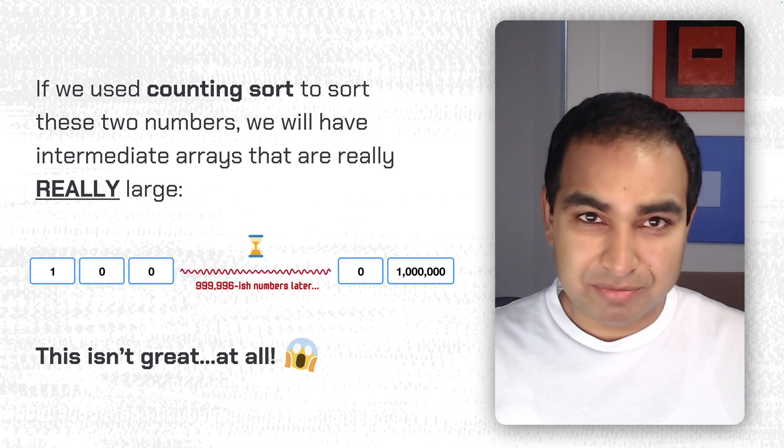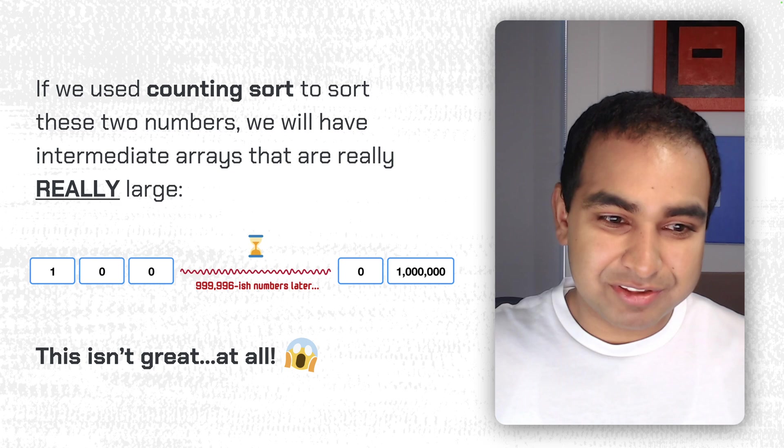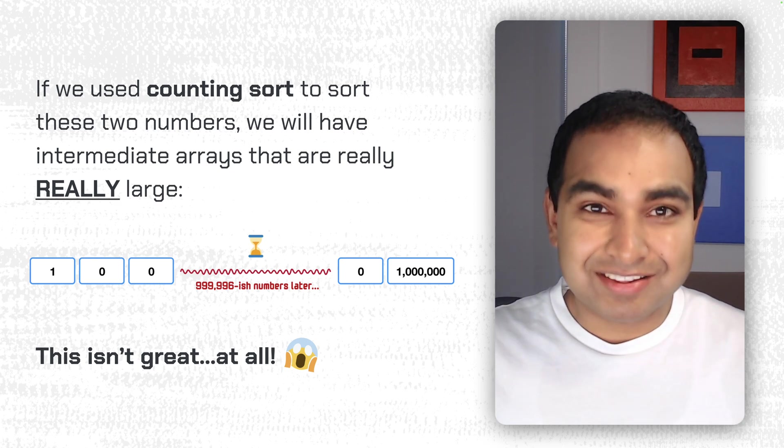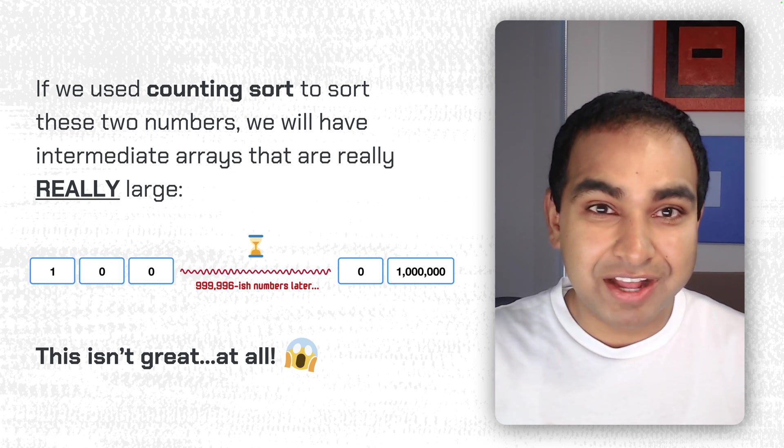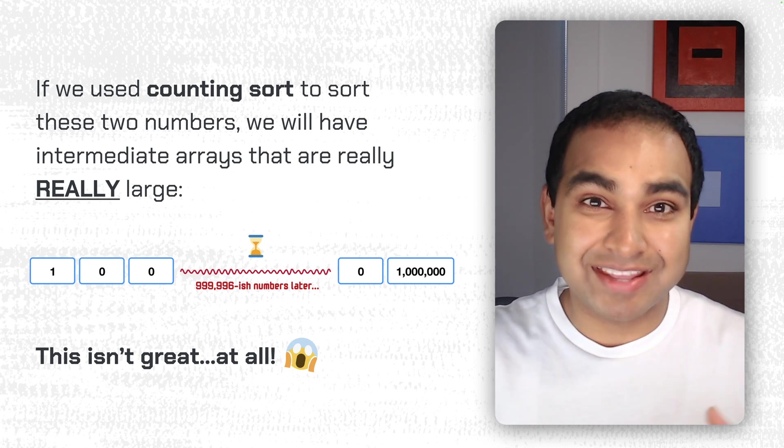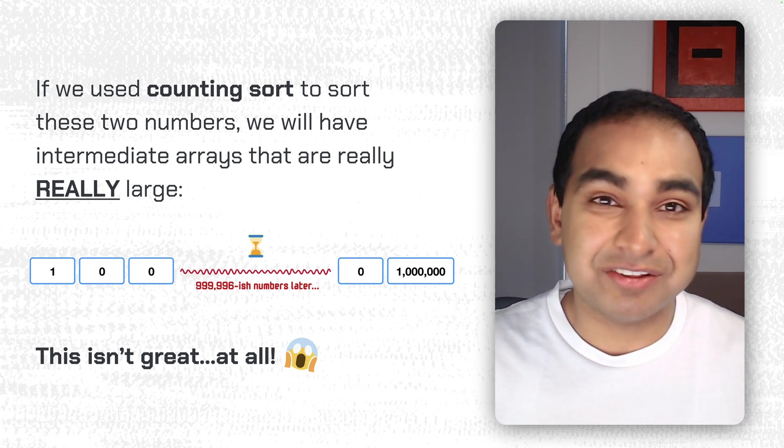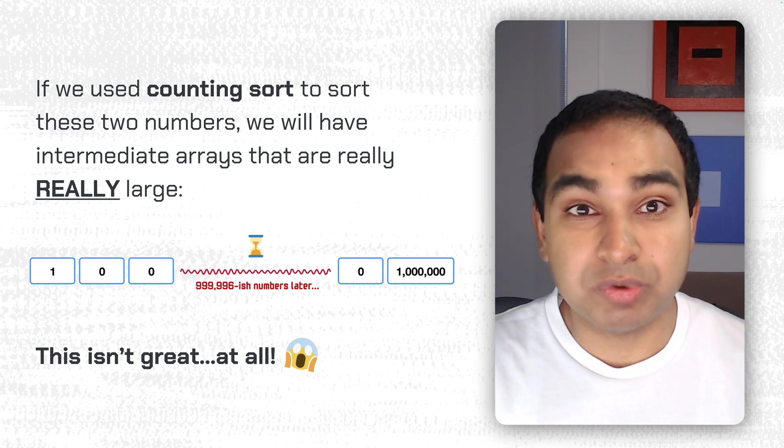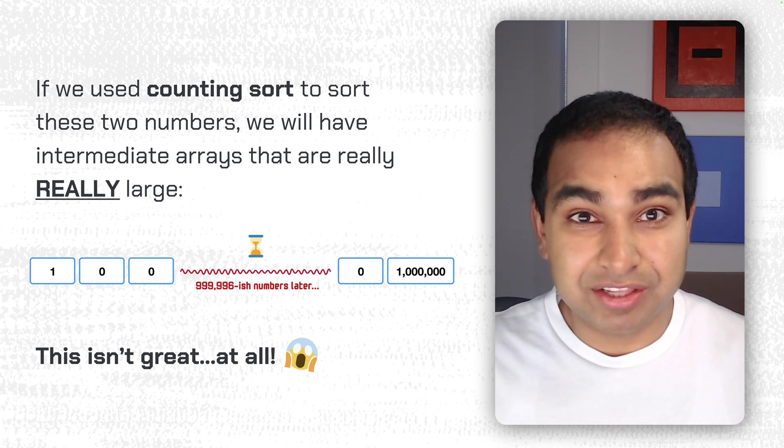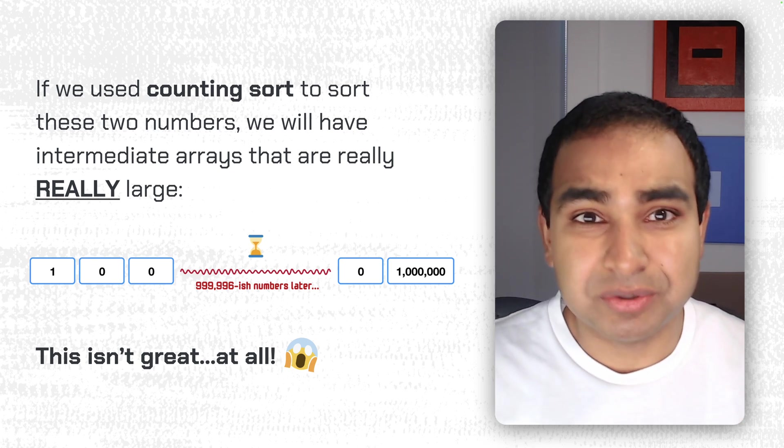And so we'd have an array whose size is encompassing every single value between 1 and 1 million, because the index positions need to be the values themselves that you're trying to store, which means you would have a really, really large array for only two items.